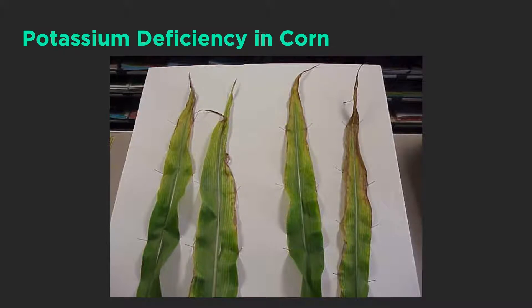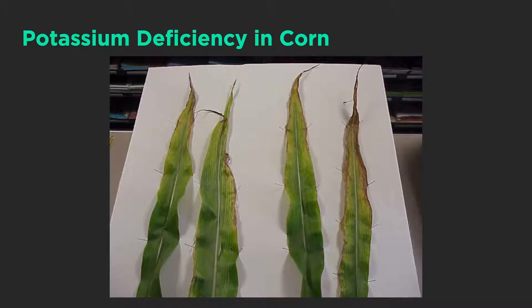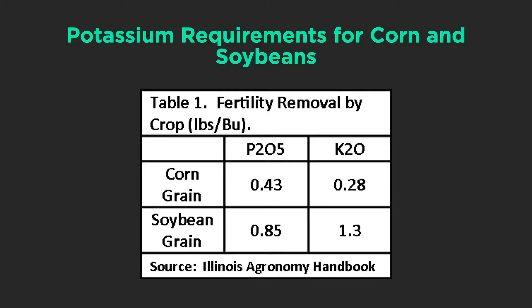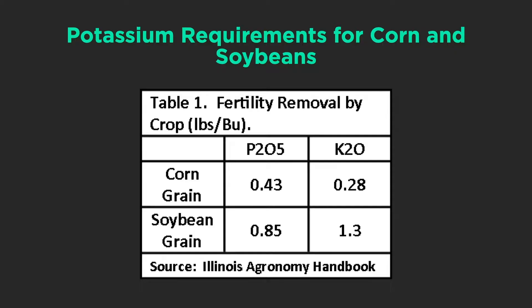Here are some corn leaves that show nice potassium deficiency from the field. With soybeans you get the same thing — it's always on the outside edges with that yellowing. We need to determine why this is happening: what fertilizer we put on, what kind of yields we're pulling off, and where we're deficient.